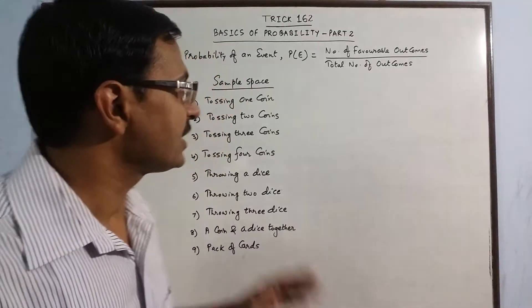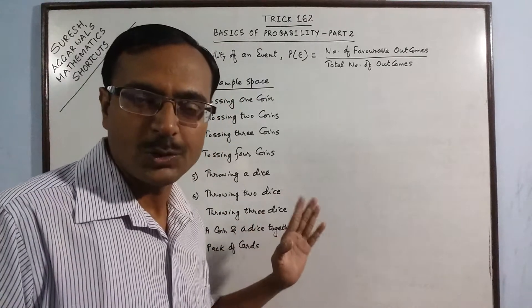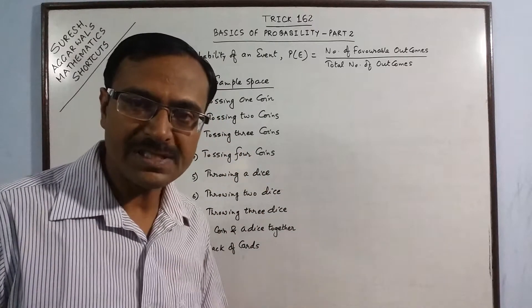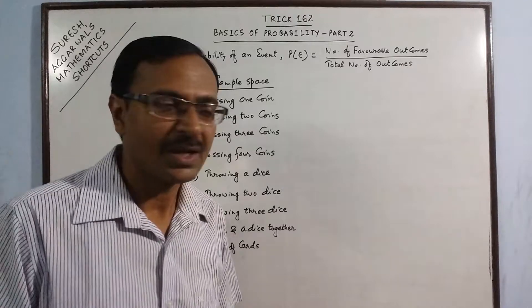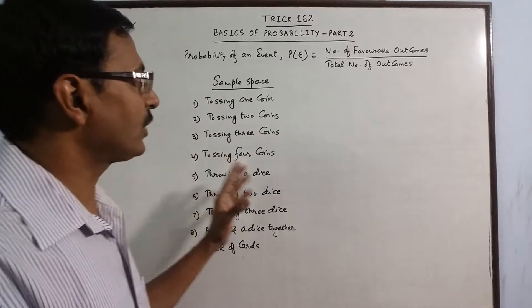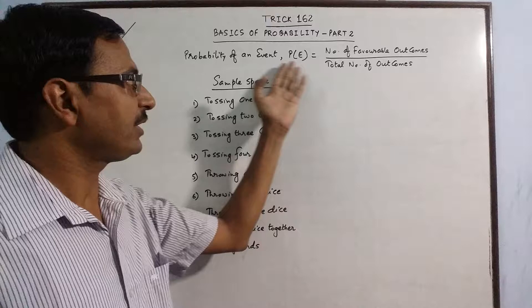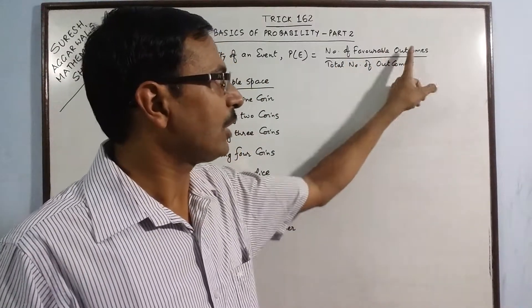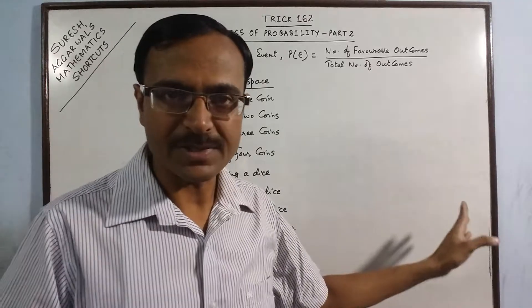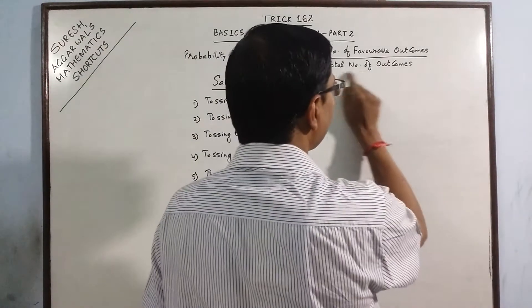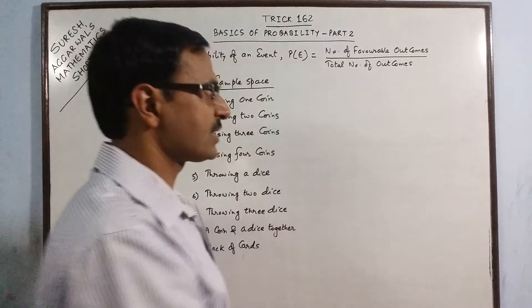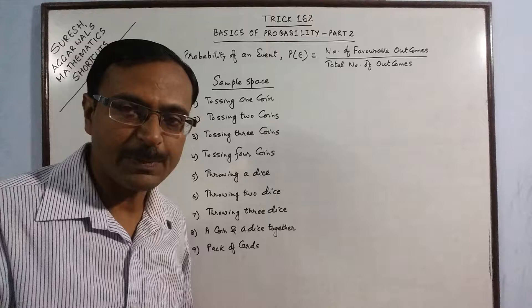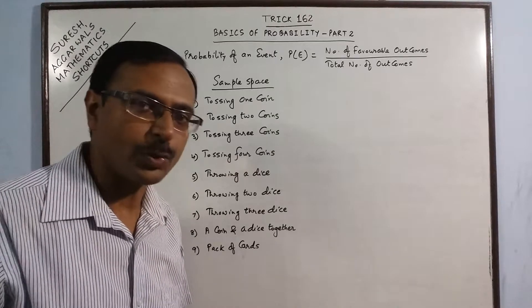Hello dear students. In our series of videos on probability, today we are going to learn how we can write the sample space of various experiments. We have already done in part 1 of this video that probability of an event is calculated using the simple formula: number of favorable outcomes upon total number of outcomes. But how do we get this total number of outcomes? For that we need to understand how to write the sample space of various experiments related to probability.